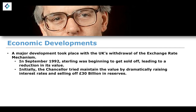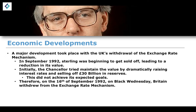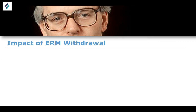So initially, the Chancellor tried to maintain the value by dramatically raising interest rates and selling off £30 billion in reserves. This was the initial monetary step attempting to keep the value of sterling as high as possible, but it didn't achieve any expected goals. Therefore, on the 16th of September 1992, we have what is known as Black Wednesday, when Britain would have to withdraw from the exchange rate mechanism.